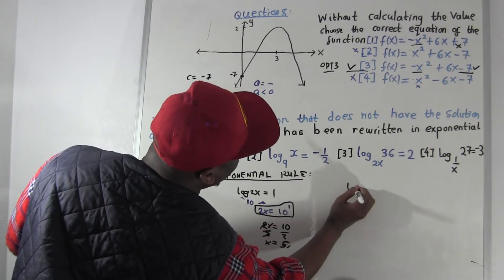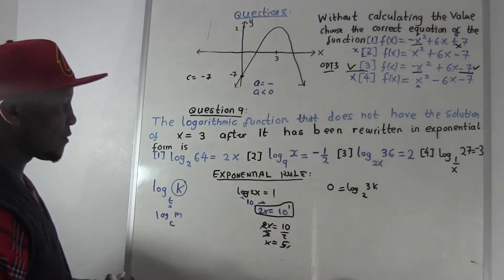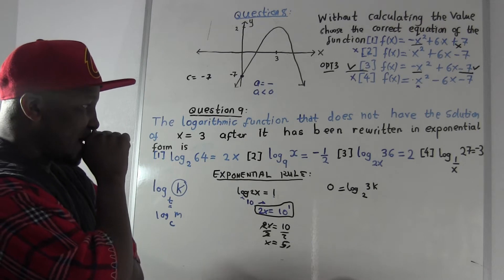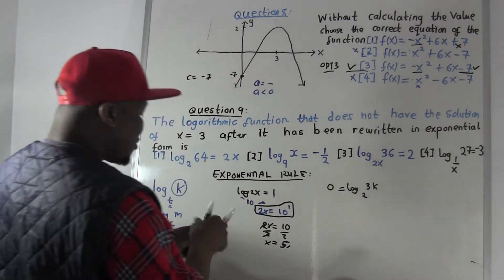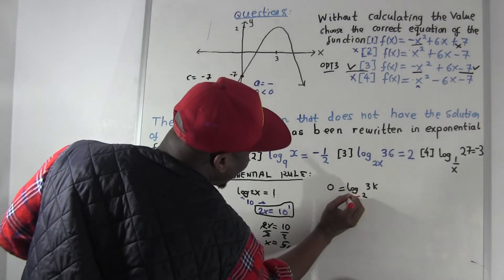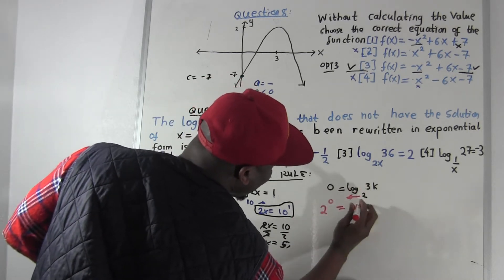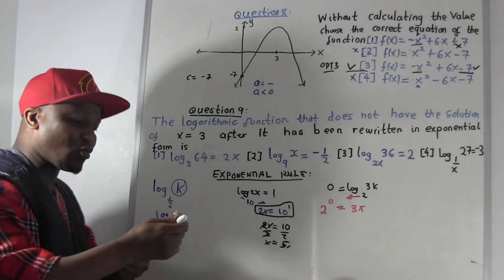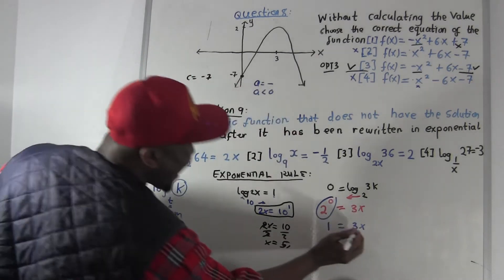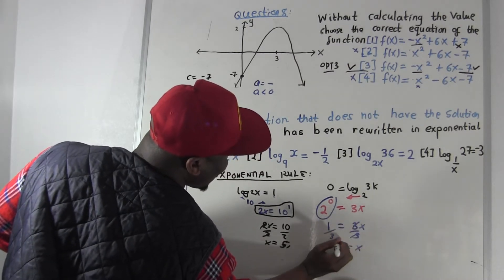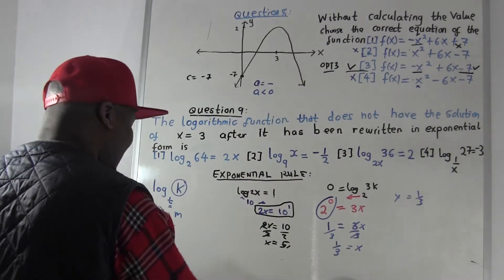One more exponential rule example: log base 2 of (3k) = 0. It's exponential because the log is on one side only. Push the 2 to the right: 2⁰ = 3k. Any number to the power zero equals one, so 2⁰ = 1. Therefore 3k = 1. Divide by 3: k = 1/3.